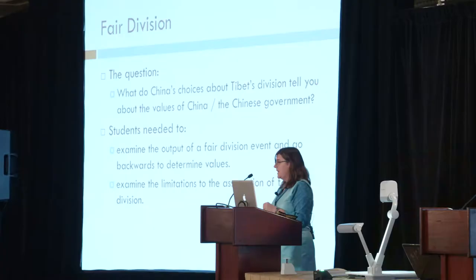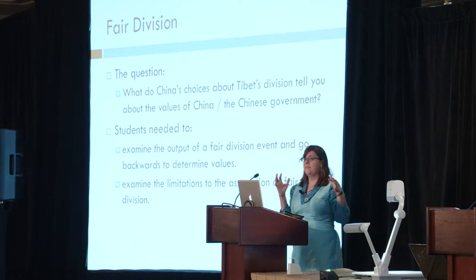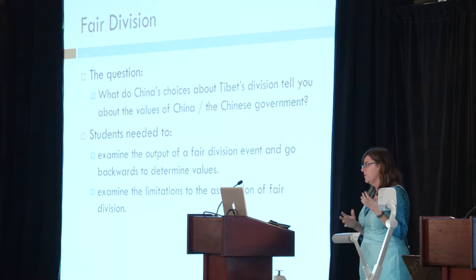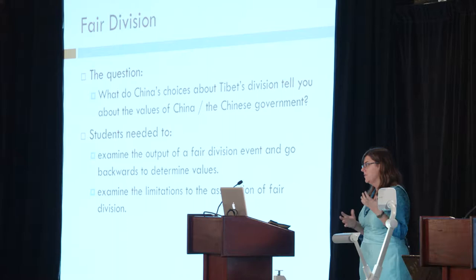The first tool we used was fair division. We were looking at the map of cultural Tibet — what Tibetans call Tibet — versus the Tibet Autonomous Region and the parts of cultural Tibet that are now part of China. I asked the students: what do China's choices about Tibet's division tell you about the values of China and/or the Chinese government? They had to examine the output of a fair division game and work backwards to determine the values of the players.